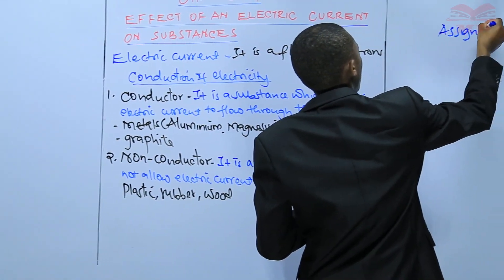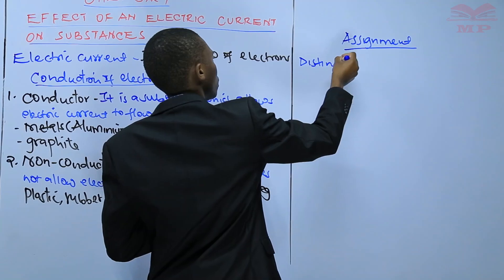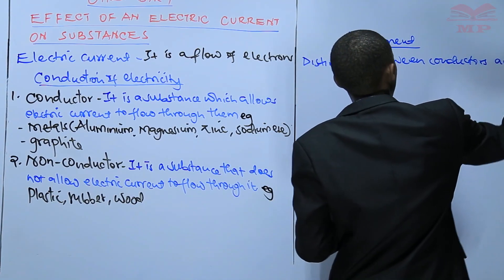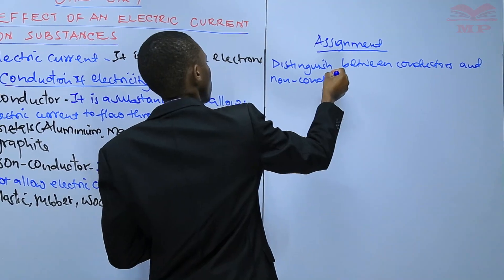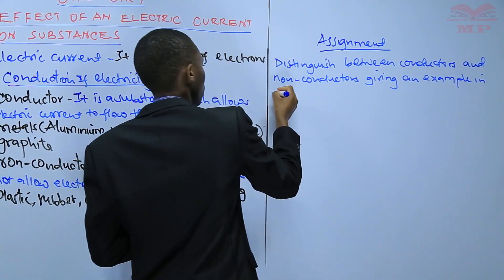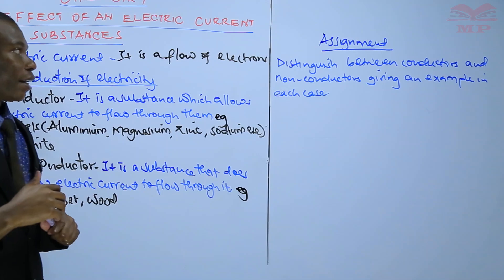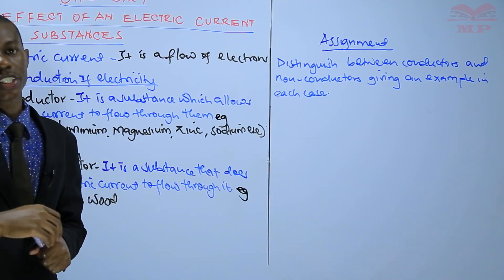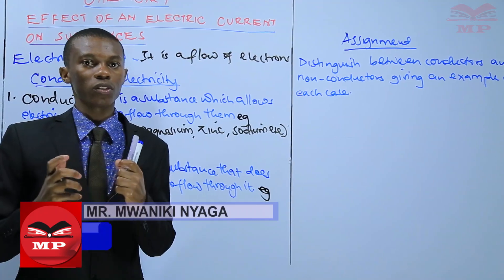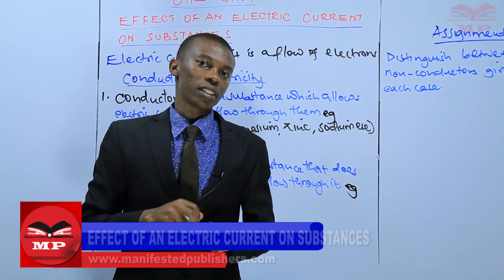Assignment: Distinguish between conductors and non-conductors, giving an example in each case. Ensure that you have done that before we meet in the next lesson, which we are going to discuss electrical conductivity in solids. See you in the next lesson.